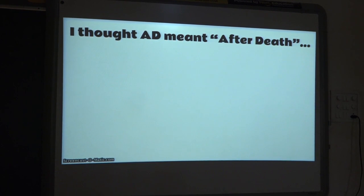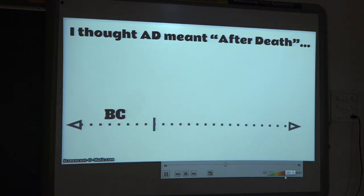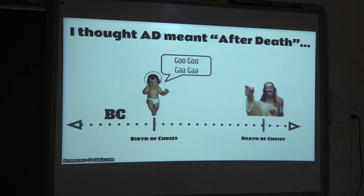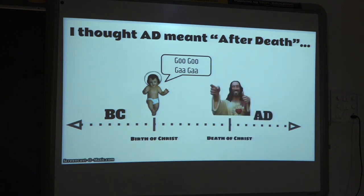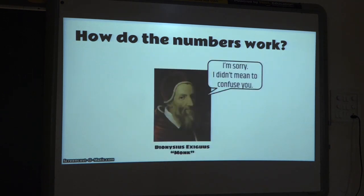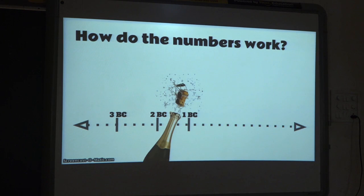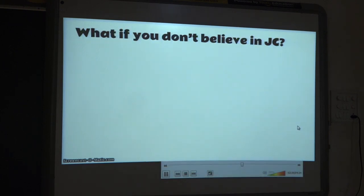There is a common misconception that AD stands for 'after death' — as in after the death of Jesus. That doesn't make any sense, because this would mean the 33 years commonly associated with the life of Jesus would not be included in either the BC or AD timescales. Think of time as a number line: all the years before Christ count down to his birth — those are negative numbers — and all the years after the birth of Jesus go up — those are positive numbers.